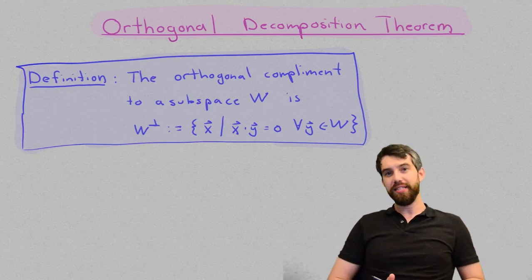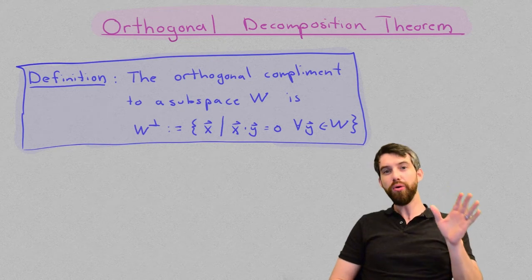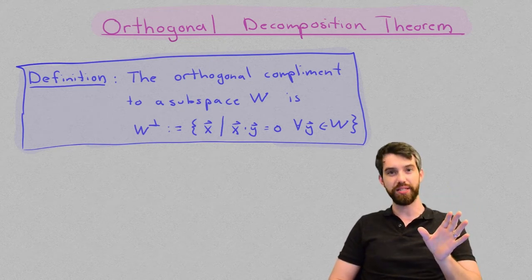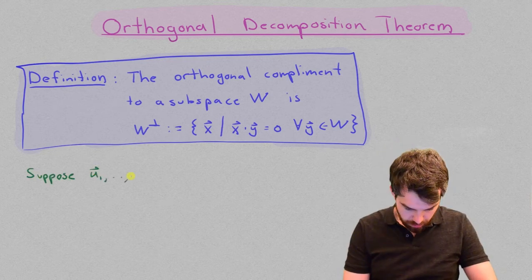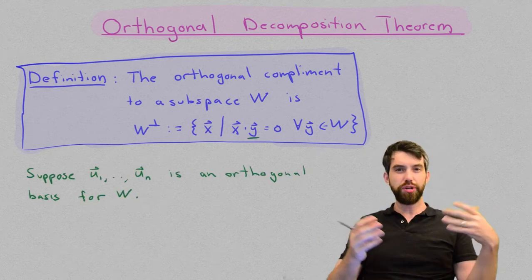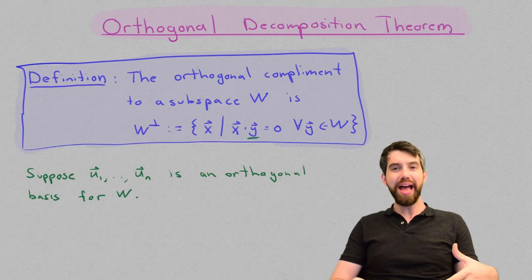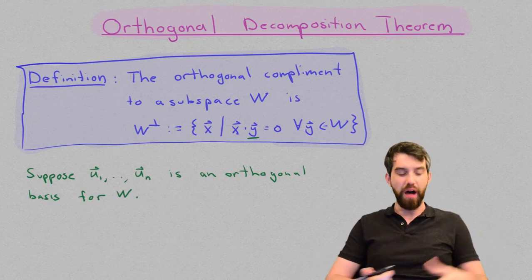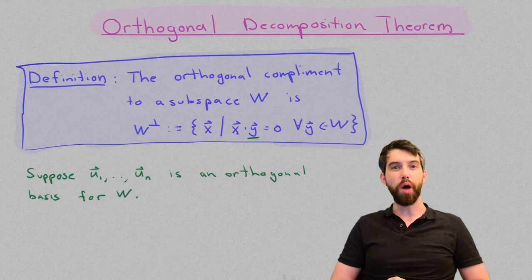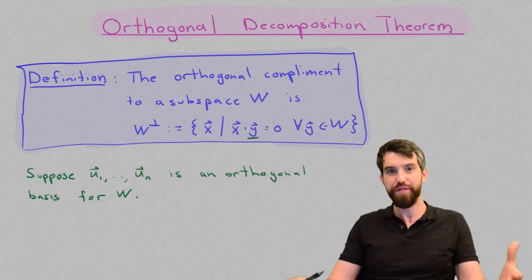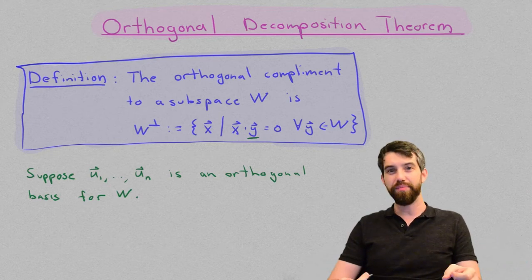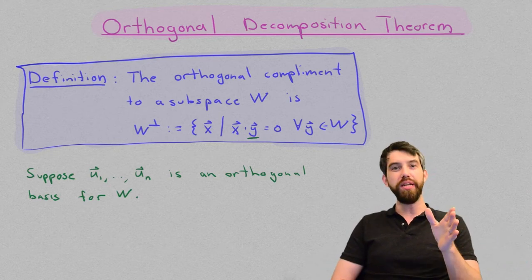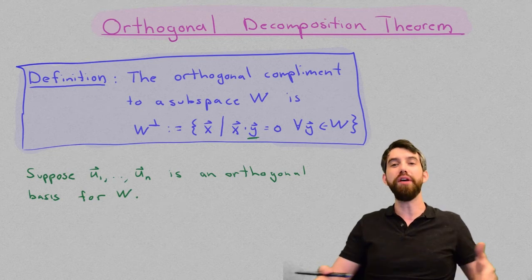Now, one of the things that's really nice is suppose that you have an orthogonal basis for your subspace w. It turns out that when you have this, you don't need to define the orthogonal complement to be the dot product with every single vector in w because that would take a really long time to check. It only is required that you need to check that it is orthogonal to all of these orthogonal basis vectors.